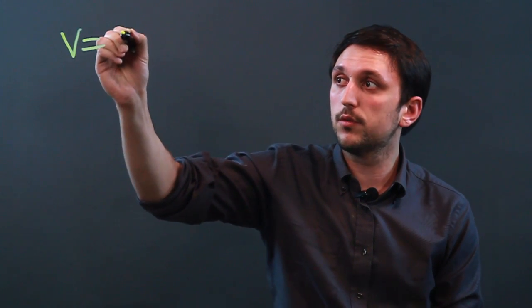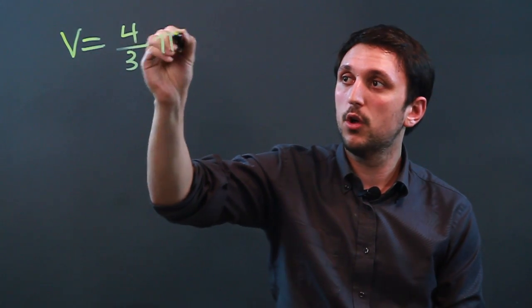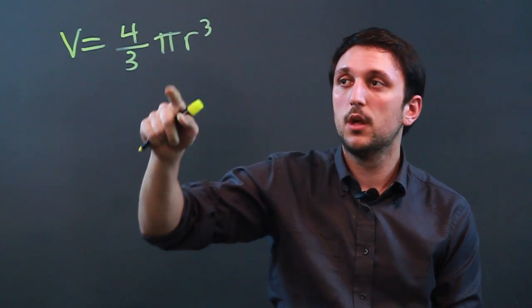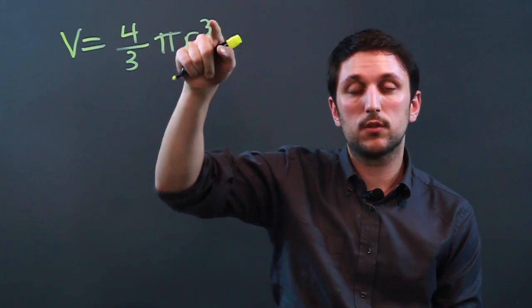First, we need the formula for the volume of a sphere. Volume equals four-thirds pi r cubed, pi radius cubed.